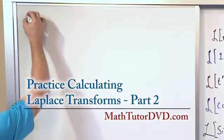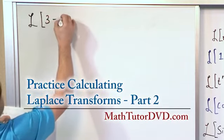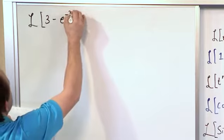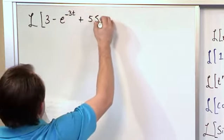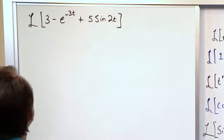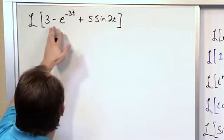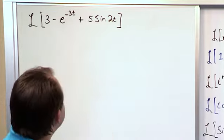First let's look at taking the Laplace Transform of 3 minus e to the minus 3t plus 5 times the sine of 2t. We have 3 terms, a linear combination of 3 terms, each one we know how to deal with so let's apply it in sequence.